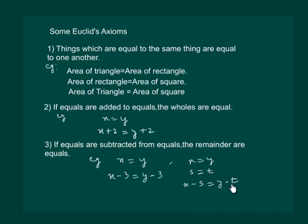This same example can be applied to the second Axiom as well. That would mean, if they are added, then x plus s will be equal to y plus t.